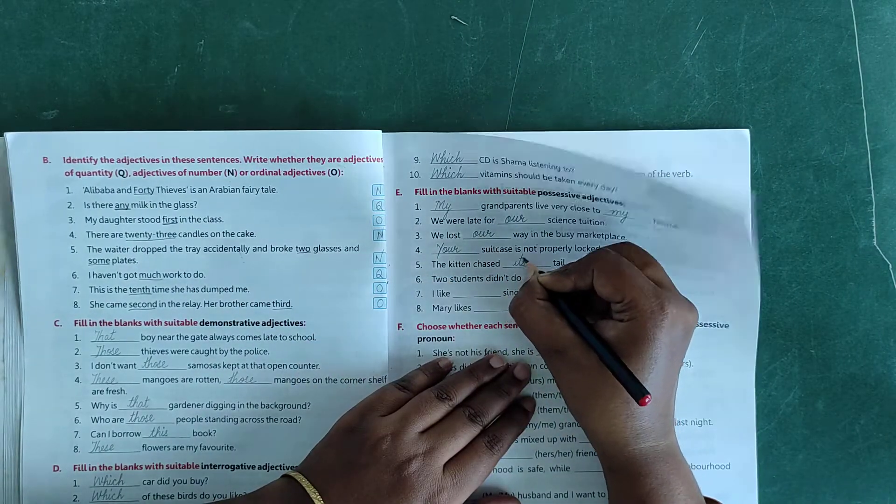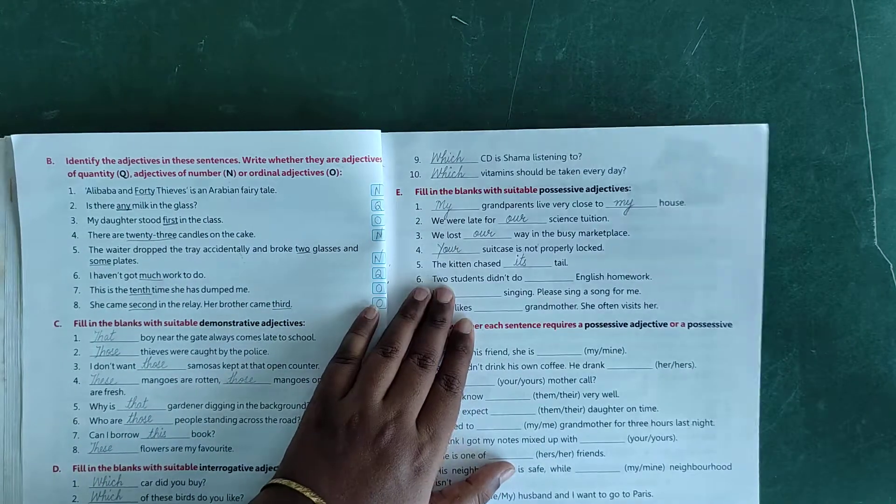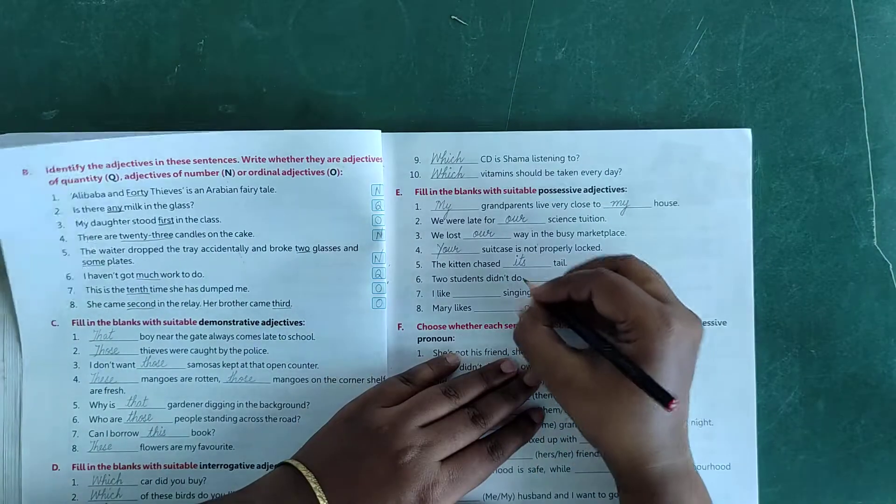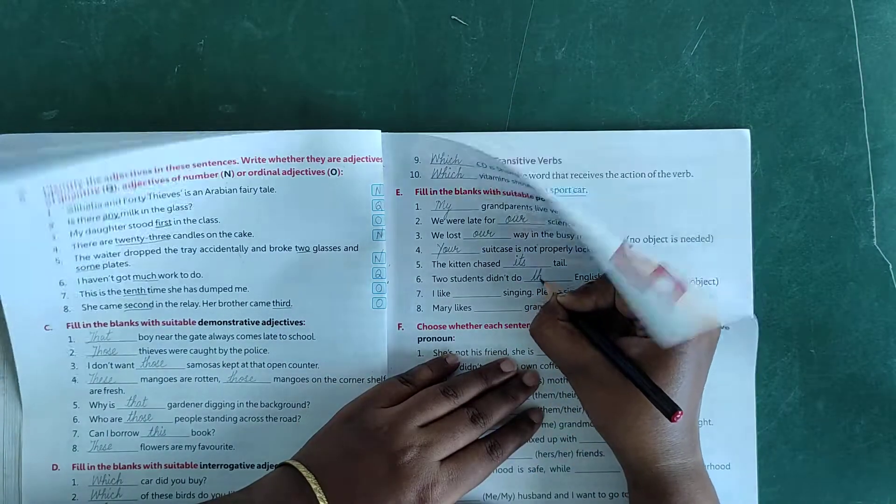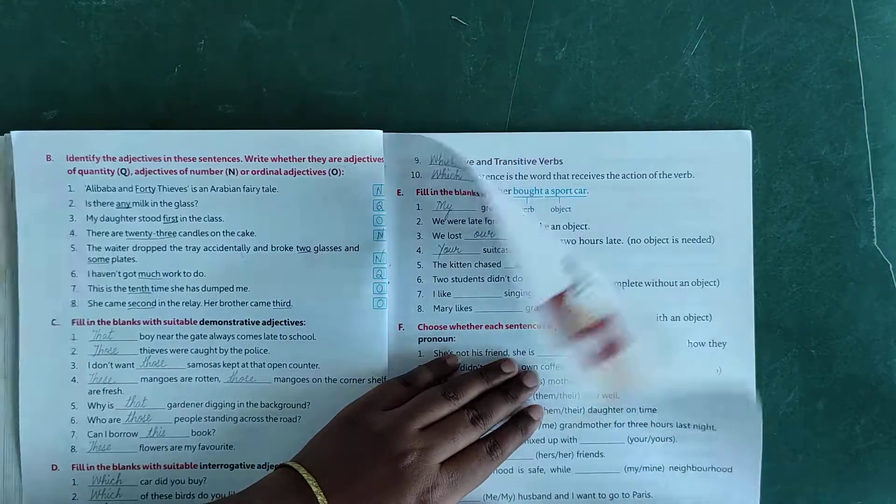Number 5: the kitten chased dash tail - the kitten chased its tail, I-T-S. Number 6: two students didn't do dash English homework - their, T-H-E-I-R, their.